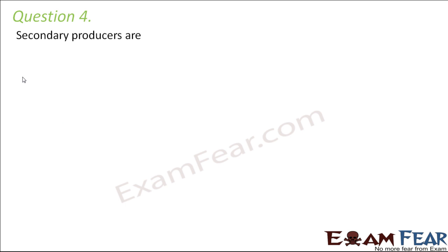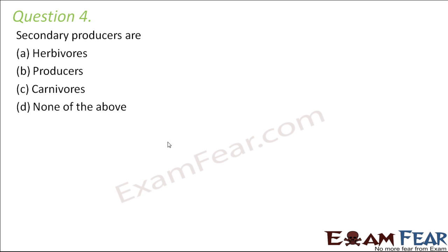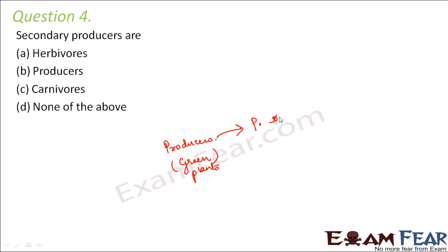Question number four: secondary producers are — herbivores, producers, carnivores, or none of the above? Producers are normally green plants in terrestrial ecosystems and phytoplankton in aquatic ecosystems. Those who eat producers are called primary consumers. There is really no concept of primary and secondary producers — producers are just producers. So the answer is none of the above.